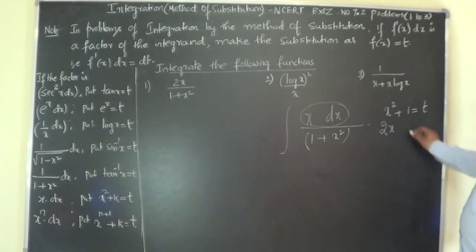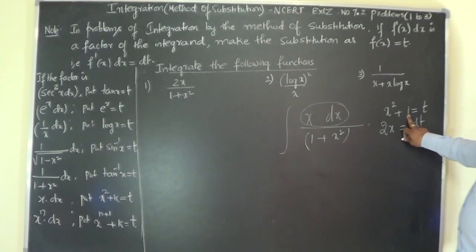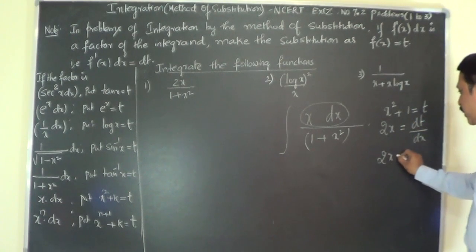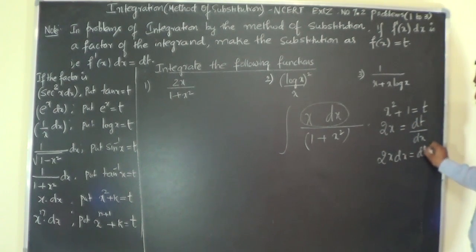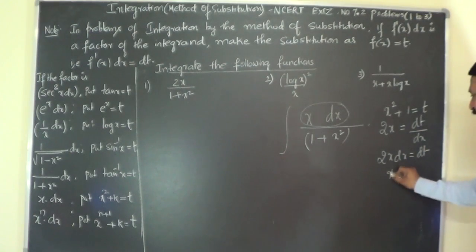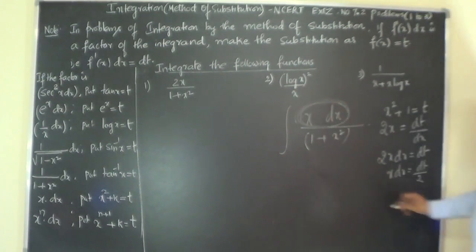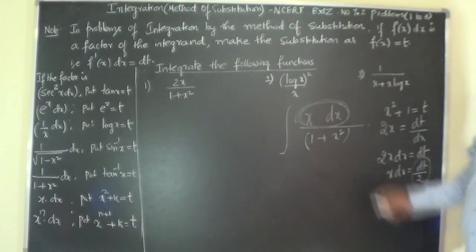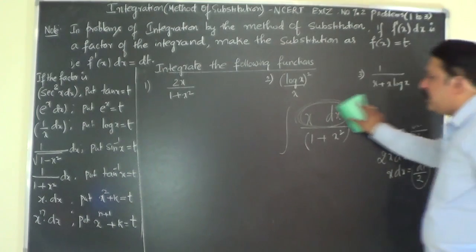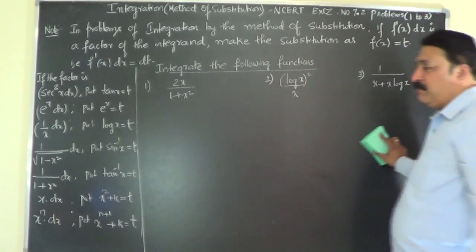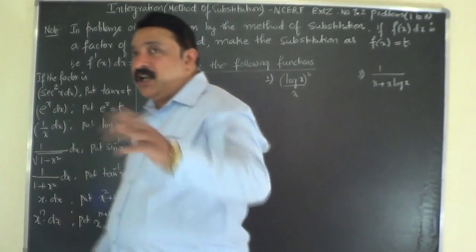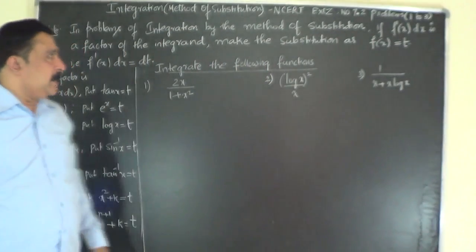Differentiating x² + 1 = t: you get 2x = dt/dx (since the differential coefficient of 1 is 0). Cross-multiplying gives 2x dx = dt, so x dx = dt/2. In the problem, you can now replace x dx by dt/2. This dt/2 is called the replacement factor for x dx. If you have a replacement factor, the method of integration by substitution will work; otherwise, you must look for another method.